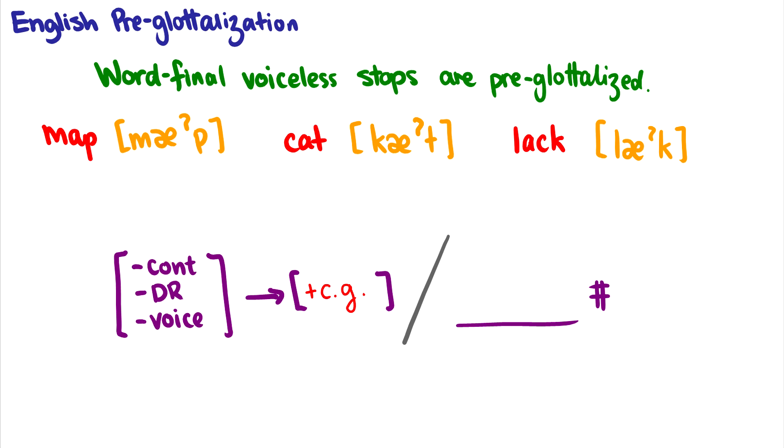So we could say to capture English pre-glottalization we could say these minus continuant, minus delayed release, minus voice are getting the plus constricted glottis feature at the end of the word. And this captures English pre-glottalization. So that's one phenomena.